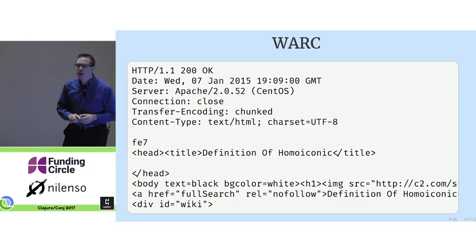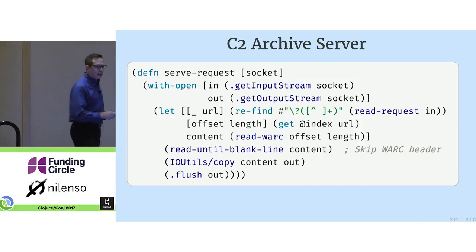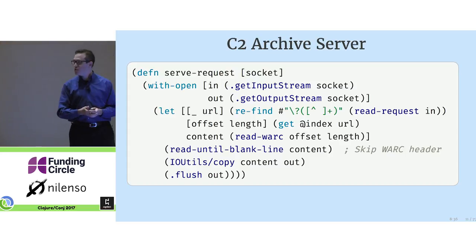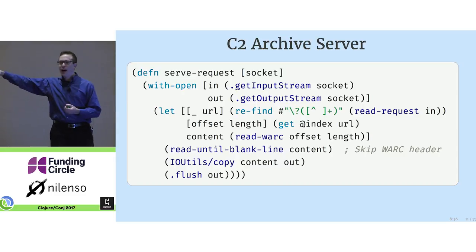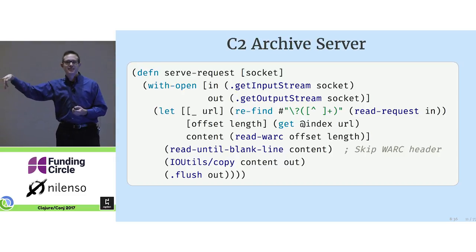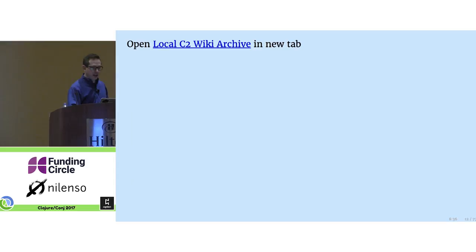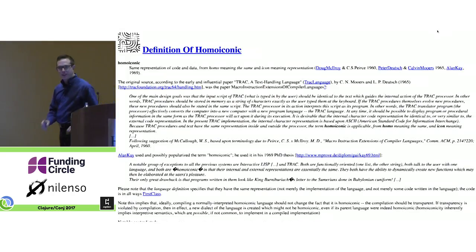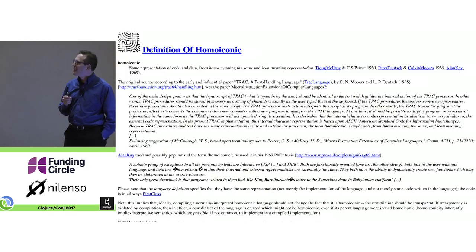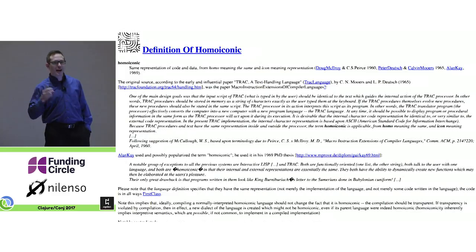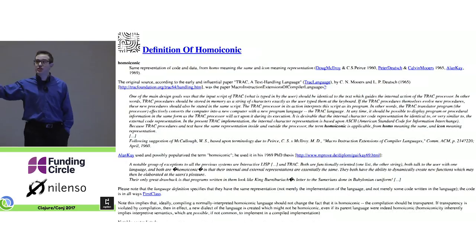So of course I wrote my own. This is the world's worst HTTP server. It uses a regular expression to parse the request, jumps to the appropriate point in the WARC file, and then copies out the bytes exactly as they appeared in 2015. Amazingly enough this works, and I could browse the wiki wiki web archives about homoiconicity, of which there are many.